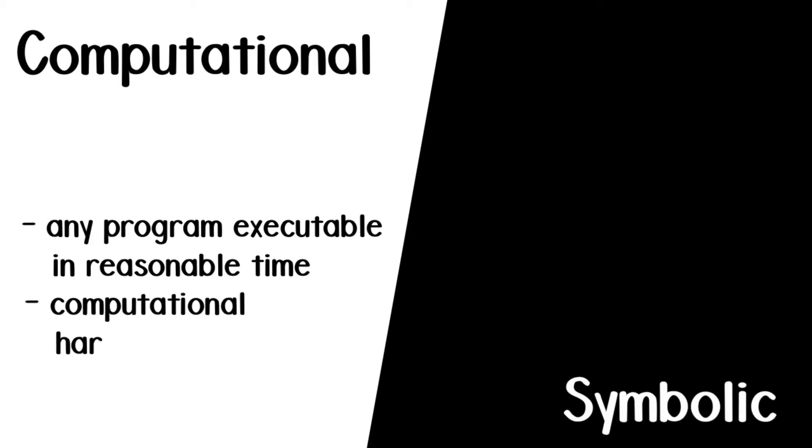In a bit more details, in the computational model, the attacker is essentially any program executable in reasonable time, and we just assume that some computational problems, like integer factoring, are hard for those attackers. Essentially, the attacker is anybody with a computer and like five years of execution time. In the symbolic model, the attacker can only perform a combination of a fixed set of capabilities.